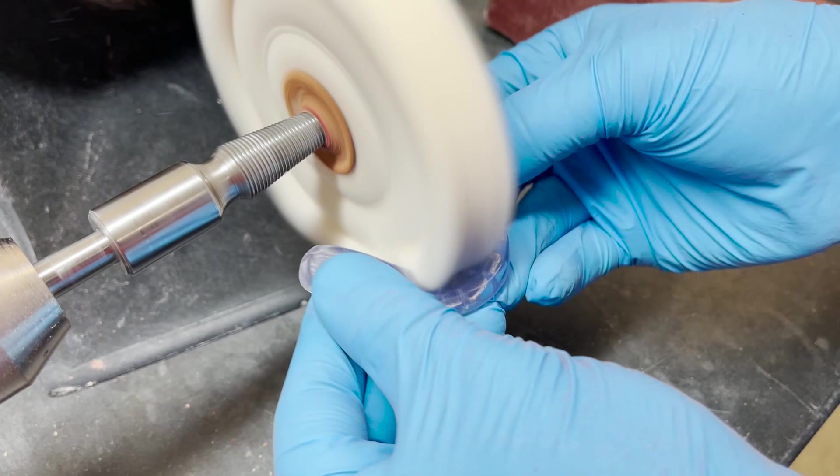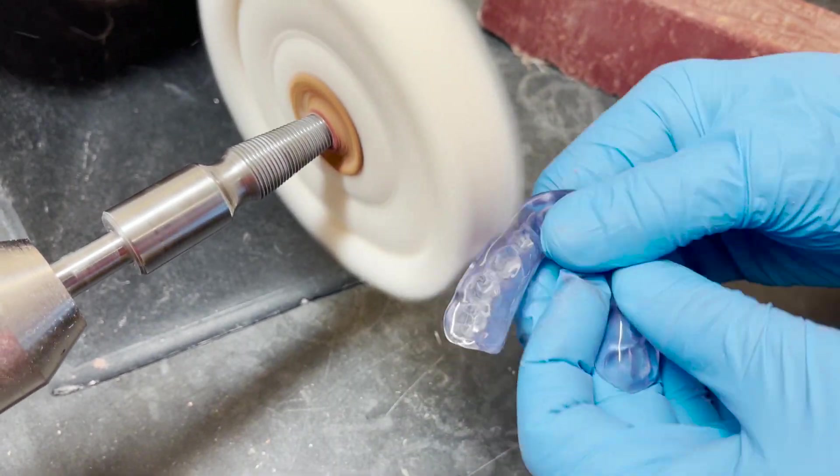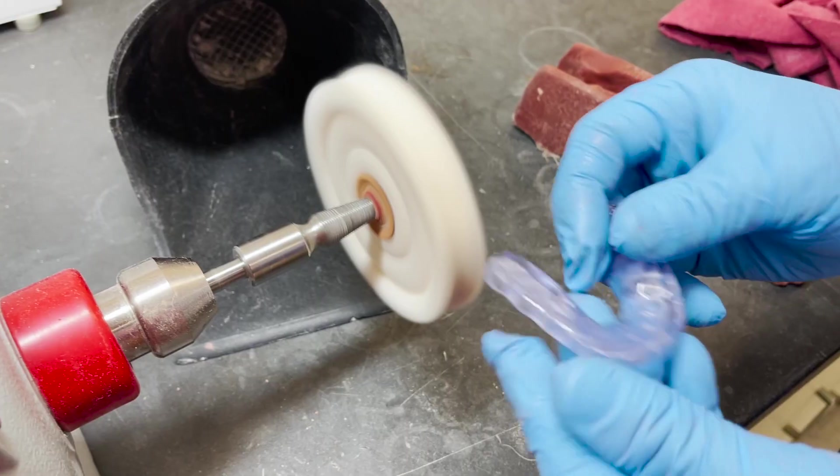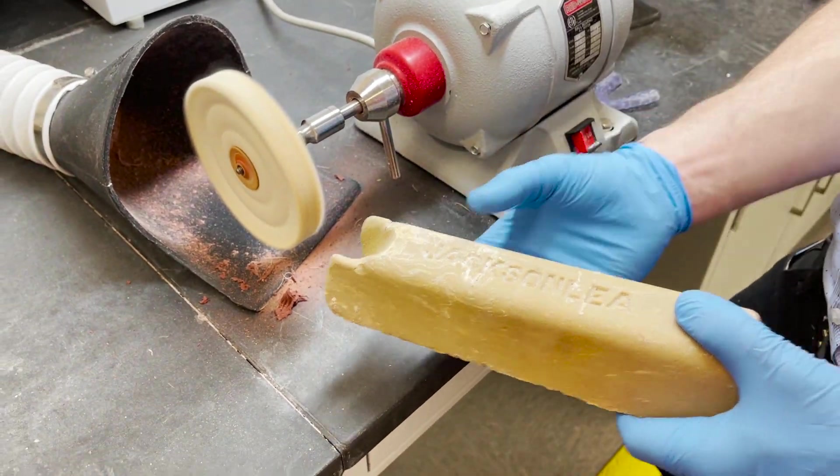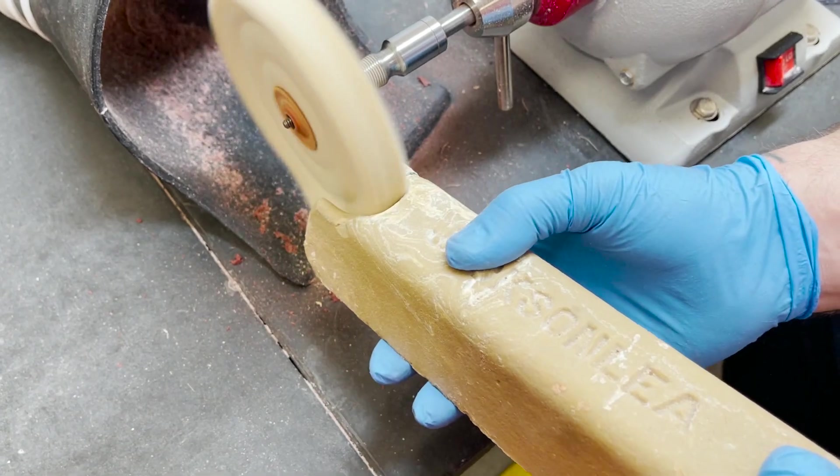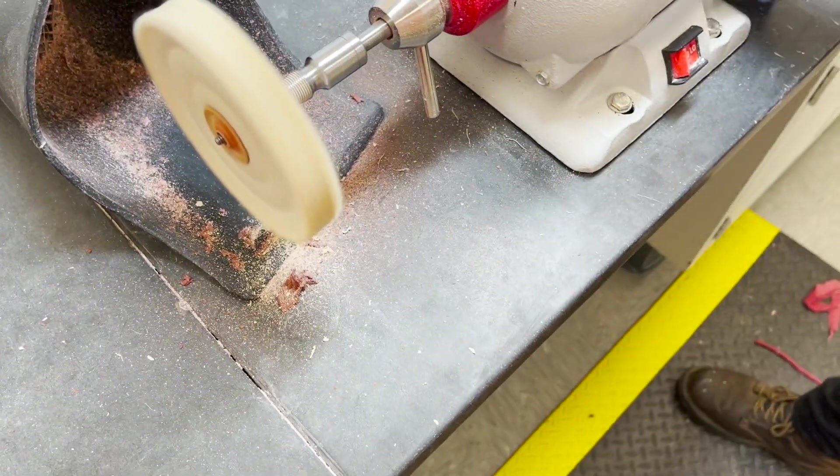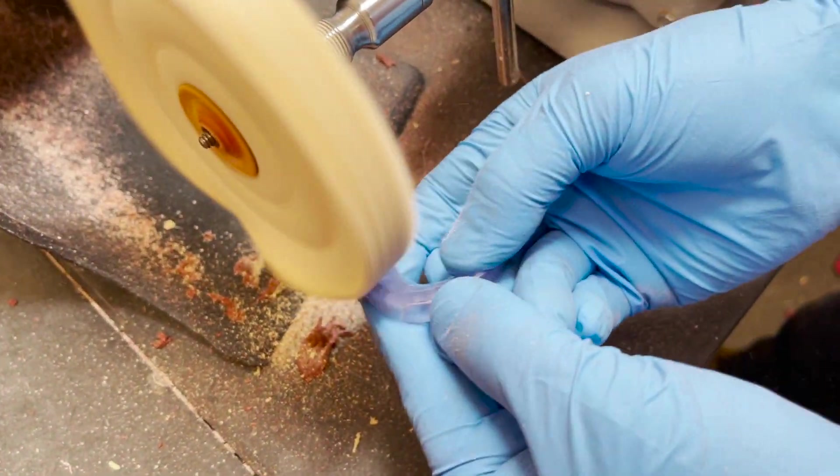We put a new wheel on. You obviously don't want to use the same wheel for a different polish as they'll cross-contaminate each other. This is a lighter compound, this is high shine.